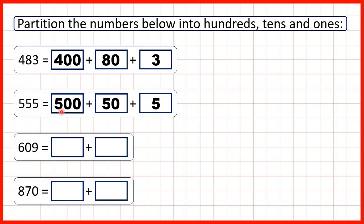Notice when we partition, we only have one digit in each of our partitioned numbers that is not zero.